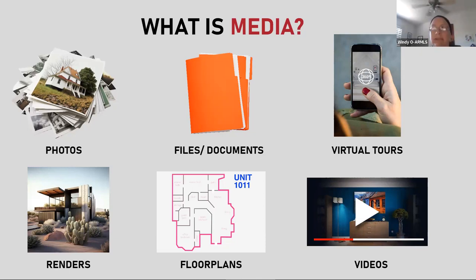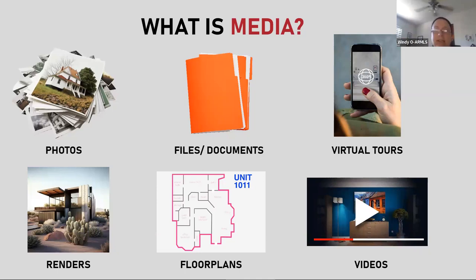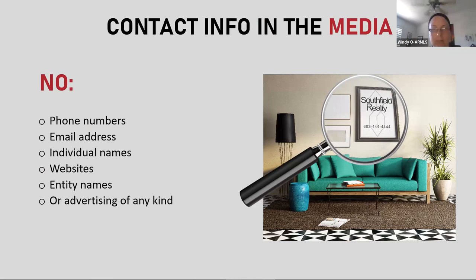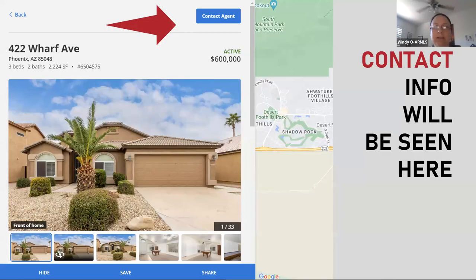The first thing I want to tell you about is media. Media is defined as photos, files, documents, virtual tours, renderings, floor plans, and videos. You cannot have contact information in the media — no phone numbers, no email address, no individual names, no websites, no entity names or advertising of any kind. This is only what's in the MLS; what you post on social media or Facebook is not considered media. Displaying contact information in Flex MLS creates confusion about who the potential client should be contacting.